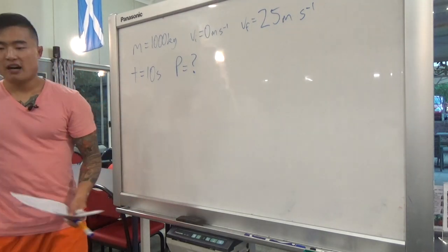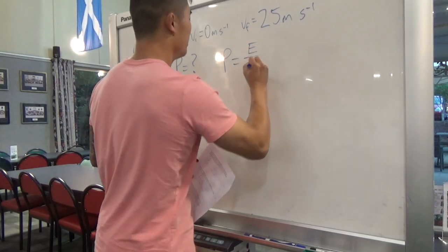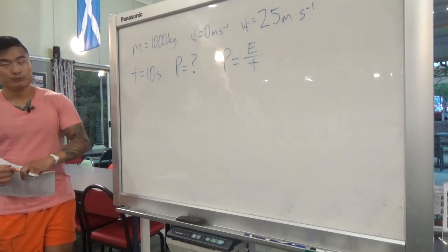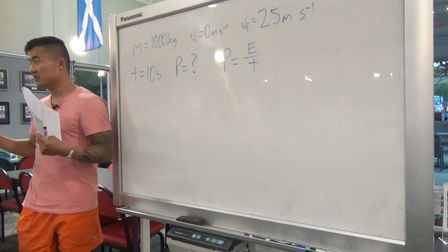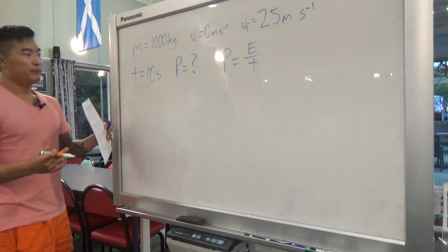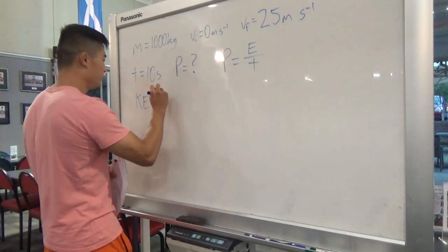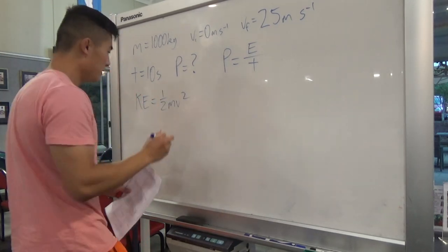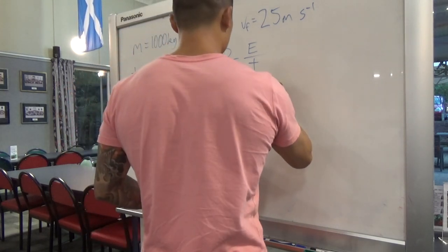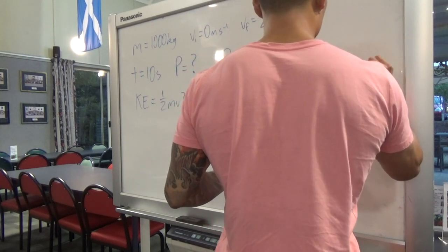Looking at our equations for power: power equals energy over time. We have time, but we need energy. A car moving at 25 meters per second has kinetic energy. Kinetic energy equals half mv squared: half times 1000 times 25 squared, giving 312,500 joules.